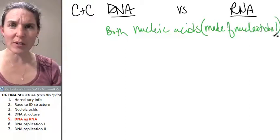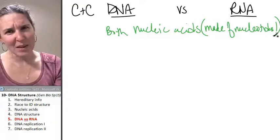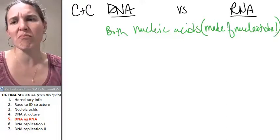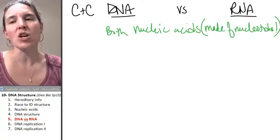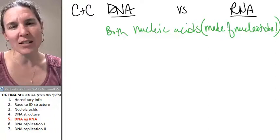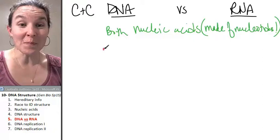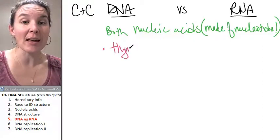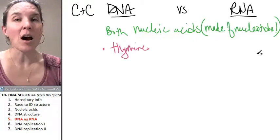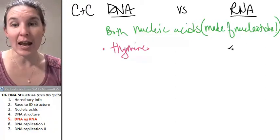It's important to understand that DNA and RNA are structurally very similar — they're made of the same thing. So what are some differences? First of all, DNA has the base thymine. RNA does not have thymine; it has uracil instead.